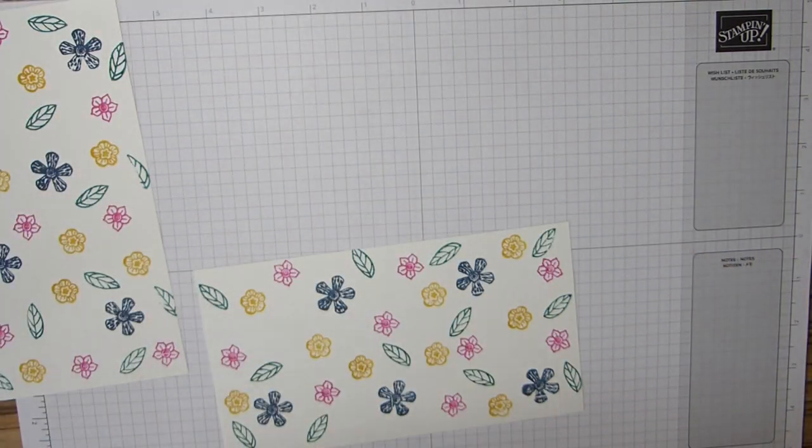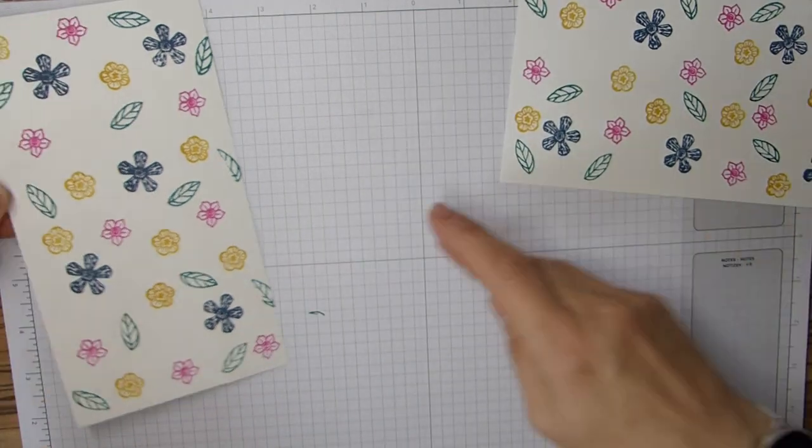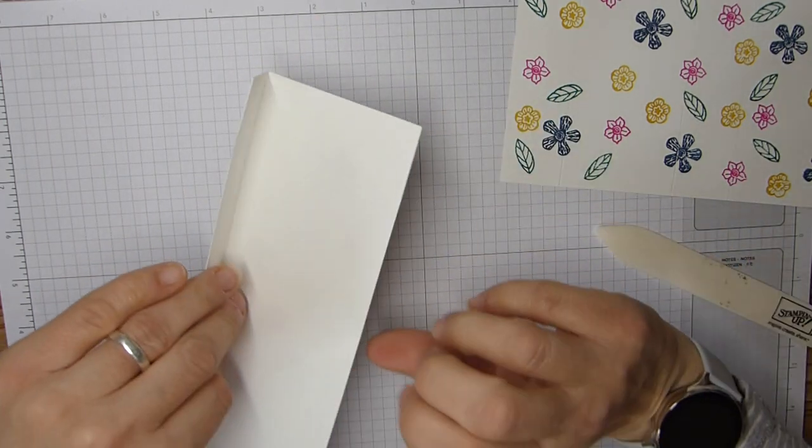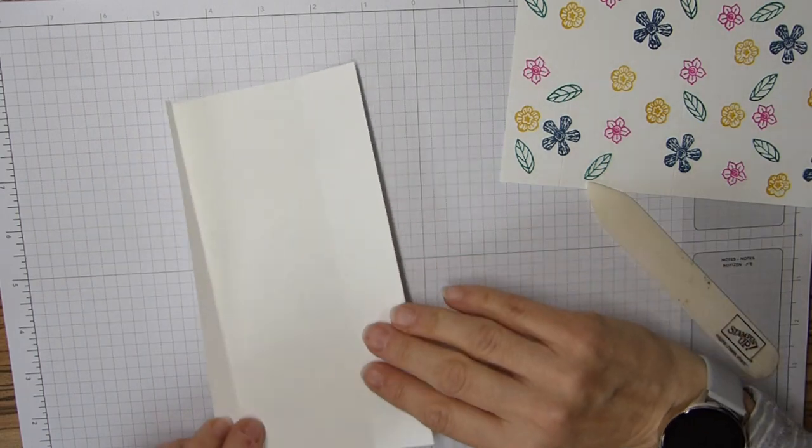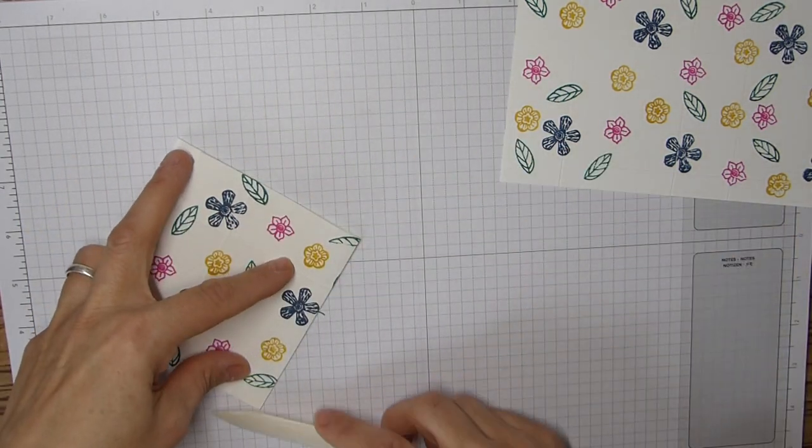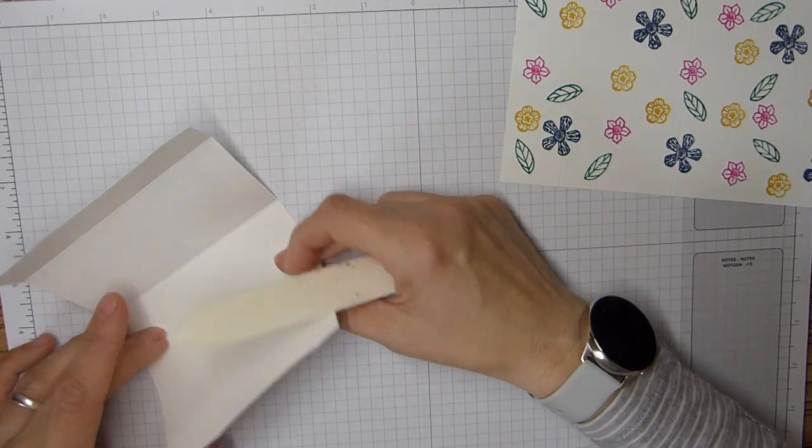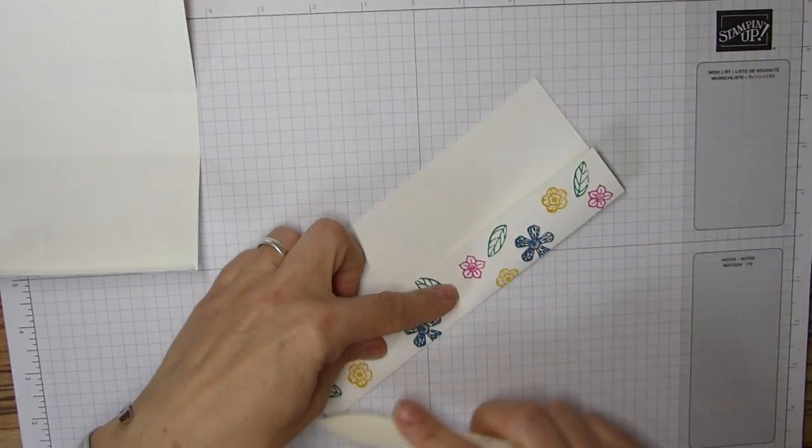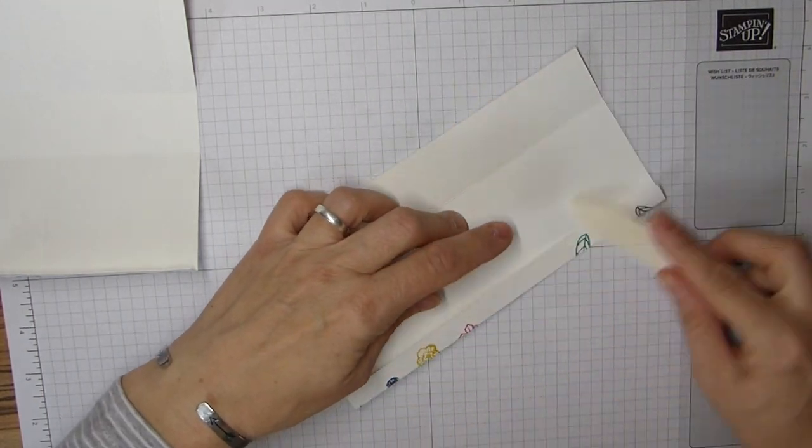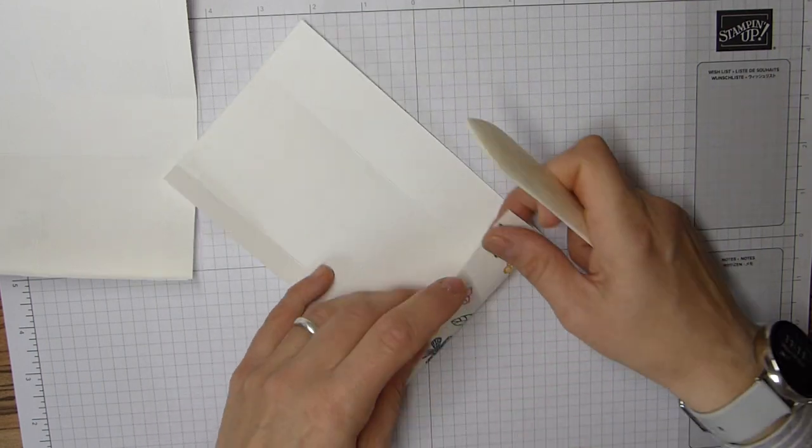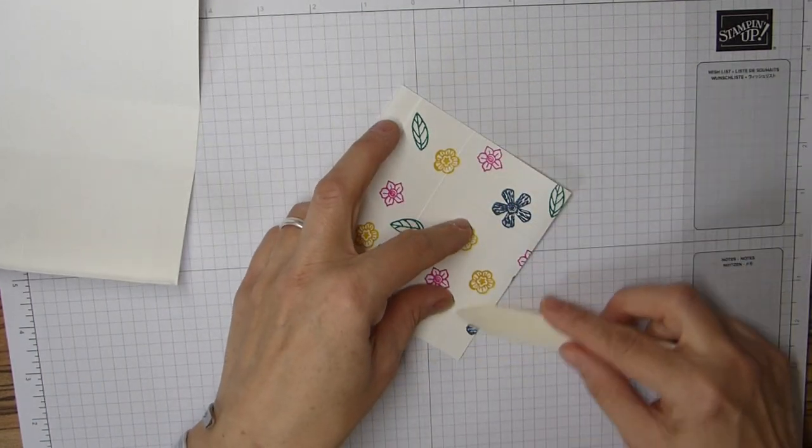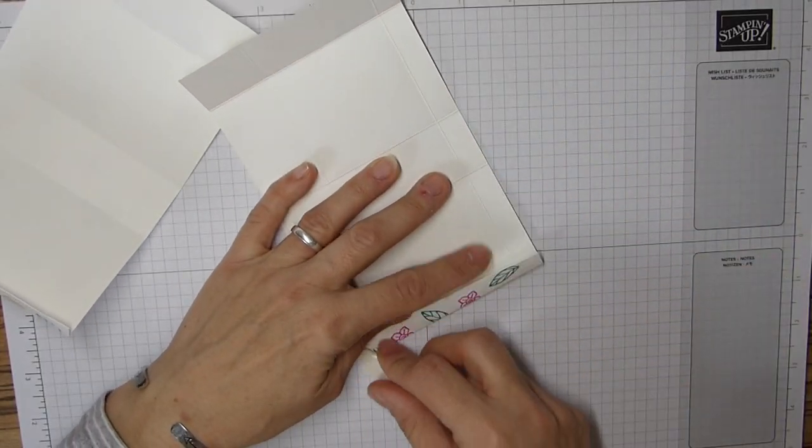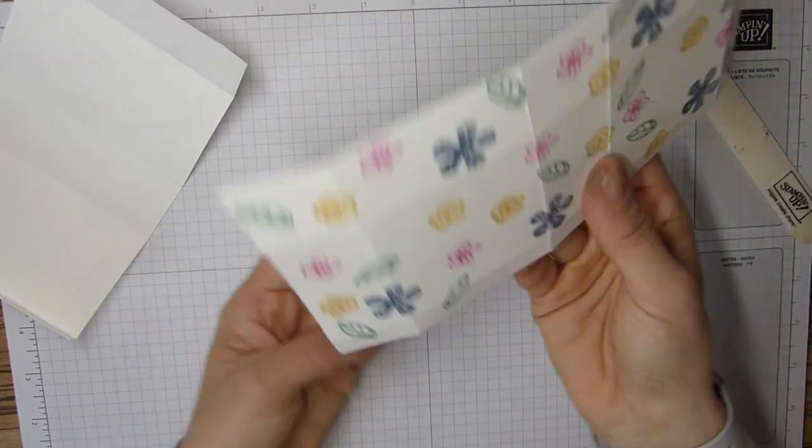Okay, now I've got those all stamped up I'm going to fold and burnish those four lines on both pieces exactly the same.